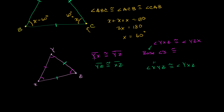There we've proved it. We said that side YX is congruent to YZ, and we've shown that YZ is congruent to XZ. So all of the sides are congruent to each other. So once again, if you have all the angles equal — and they're going to have to be 60 degrees — then you know that all of the sides are going to be equal as well. They're going to be congruent.